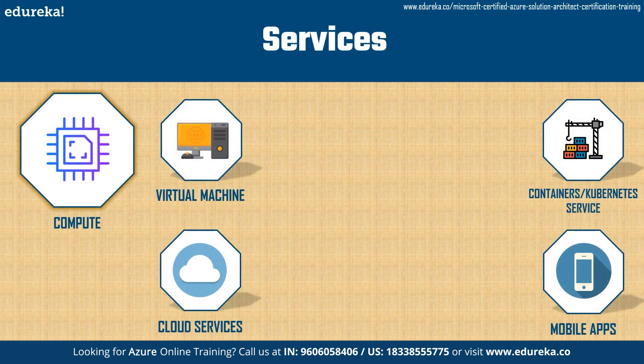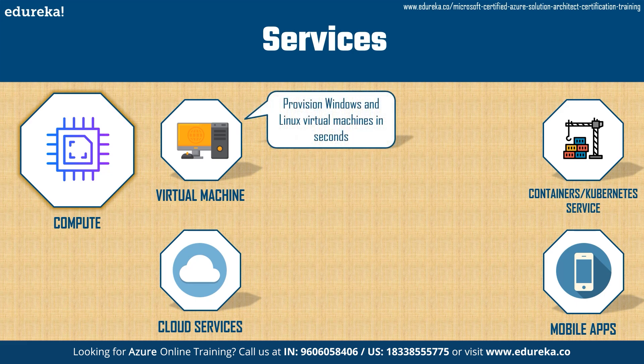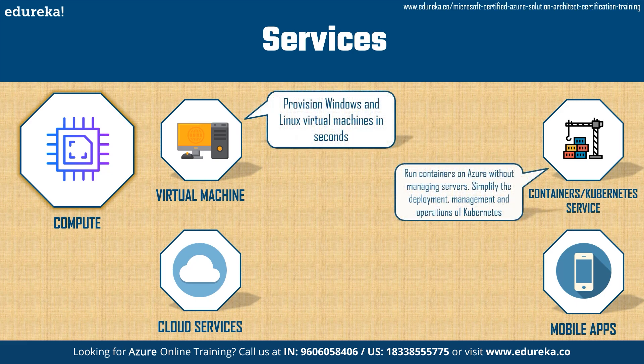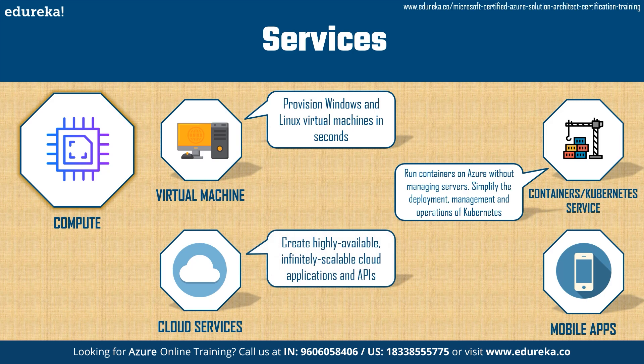The first product John needs is compute. He can use this to deploy and manage virtual machines, containers, and batch jobs, as well as support remote application access. Compute resources in the cloud can be configured with either public or private IP addresses depending on whether the resource needs to be accessible to the outside world. Services within compute include virtual machines, containers, Kubernetes Service, cloud services, and mobile apps.